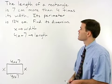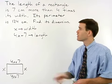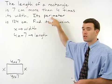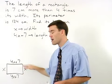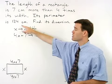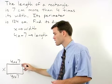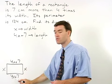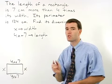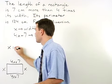Now we can use the second sentence to set up our equation. The perimeter of a rectangle is the distance around the outside of the figure. So if our perimeter is 124 centimeters, that means that x plus x plus 4x plus 7 plus 4x plus 7 equals 124. And that's going to be our equation.